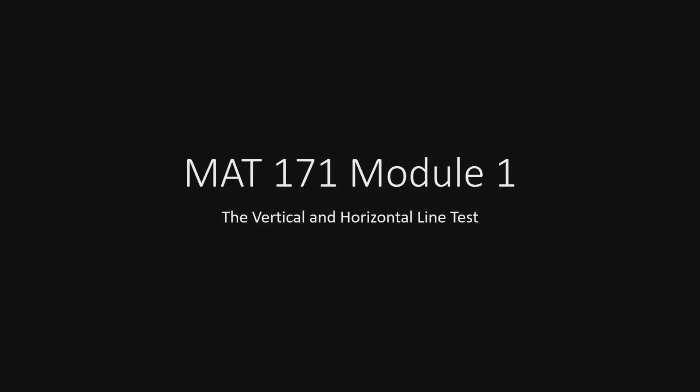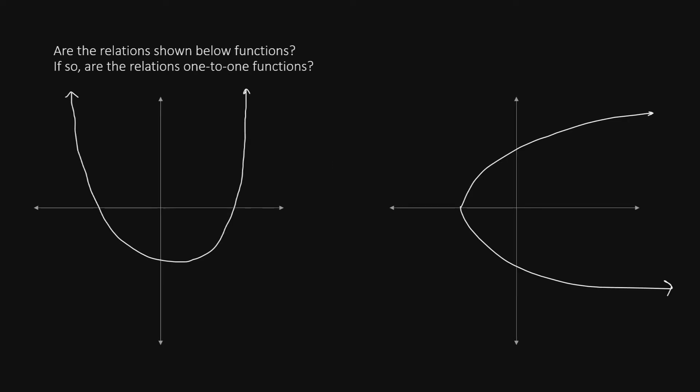Math 171, module 1: the vertical and horizontal line test. In this question we are given graphs and asked if the relations shown below are functions, and if so, are they one-to-one functions. There is a test we can do to find out if they are functions, called the vertical line test. For the vertical line test, we examine the graph of each relation and see if there is a way to draw a vertical line that would cross through the graph twice.